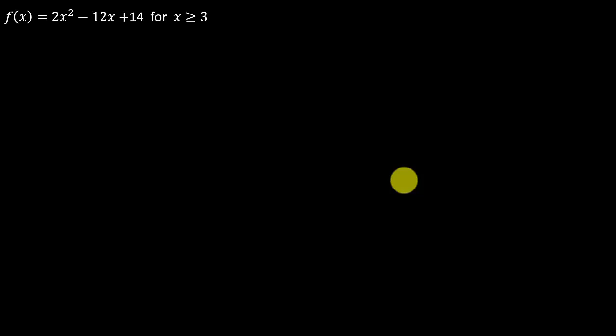Alright, so before we get started, the first thing we're going to need to do before we find the inverse is we're going to have to turn this into its vertex form. So I'm going to rewrite this. f(x) is equal to 2x squared minus 12x. I'm going to put that in parentheses and then plus 14.